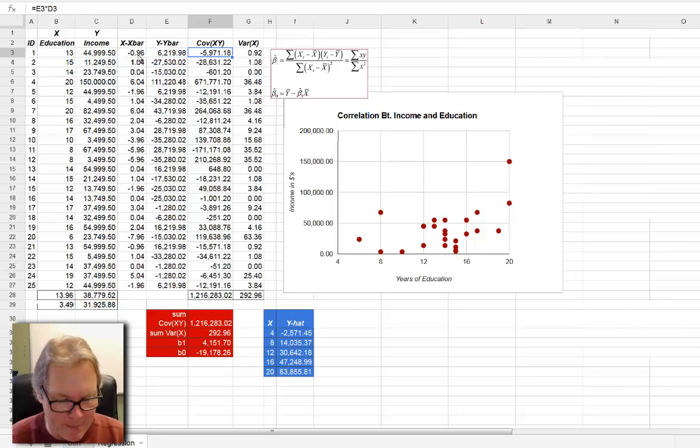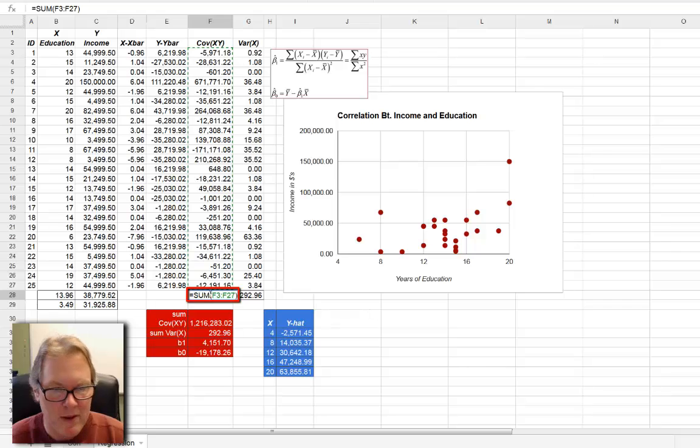In column F I'm multiplying these two numbers together, so I'm taking the minus 0.96 multiplying it times 6,219.98, and I'm getting one part of my covariance. I simply copy this column or this cell value to all these cells, and then at the bottom I'm using another spreadsheet function to sum up all the values above it. That value, that 1,216,283.02, is my numerator. That's the covariance of x and y.